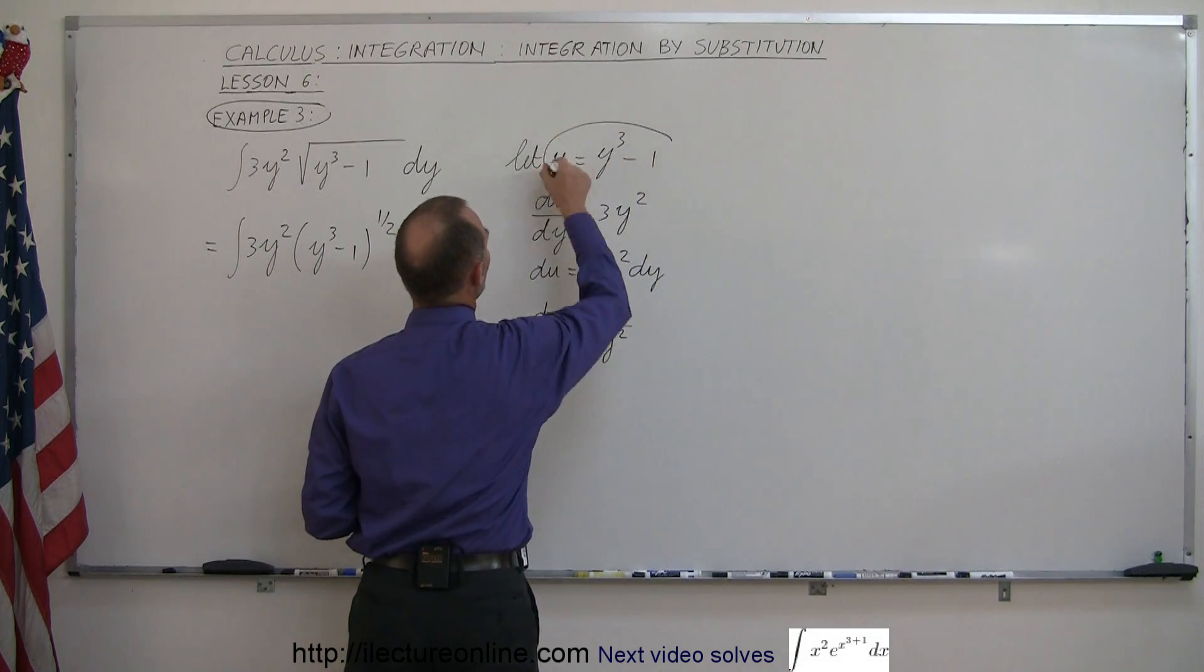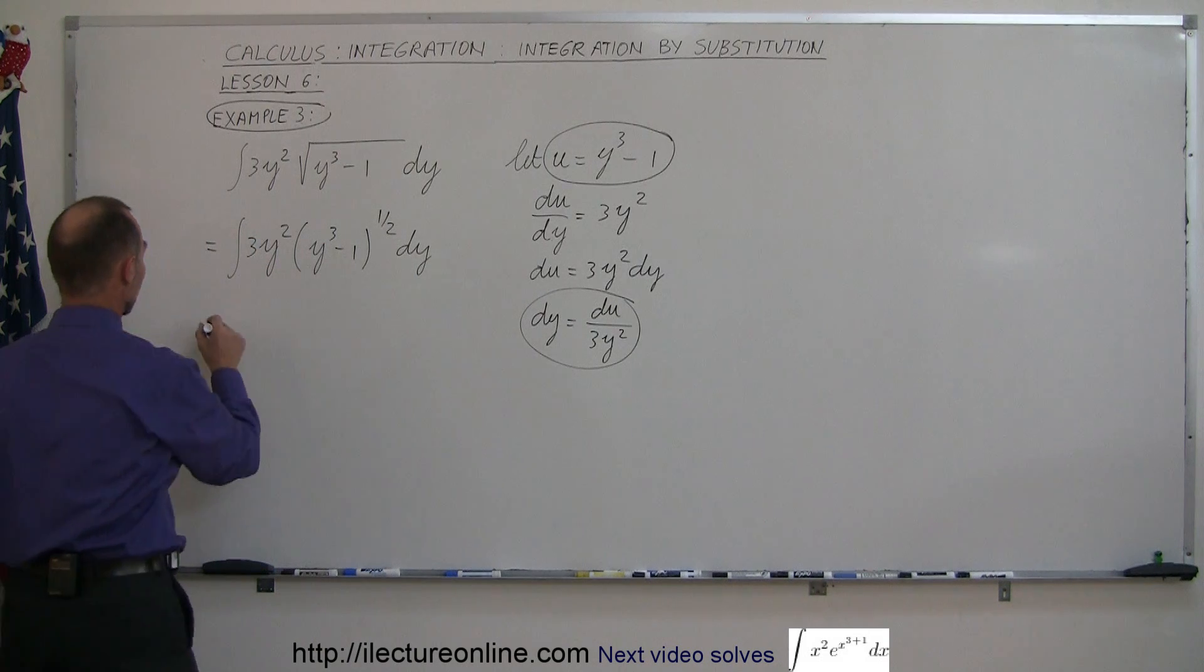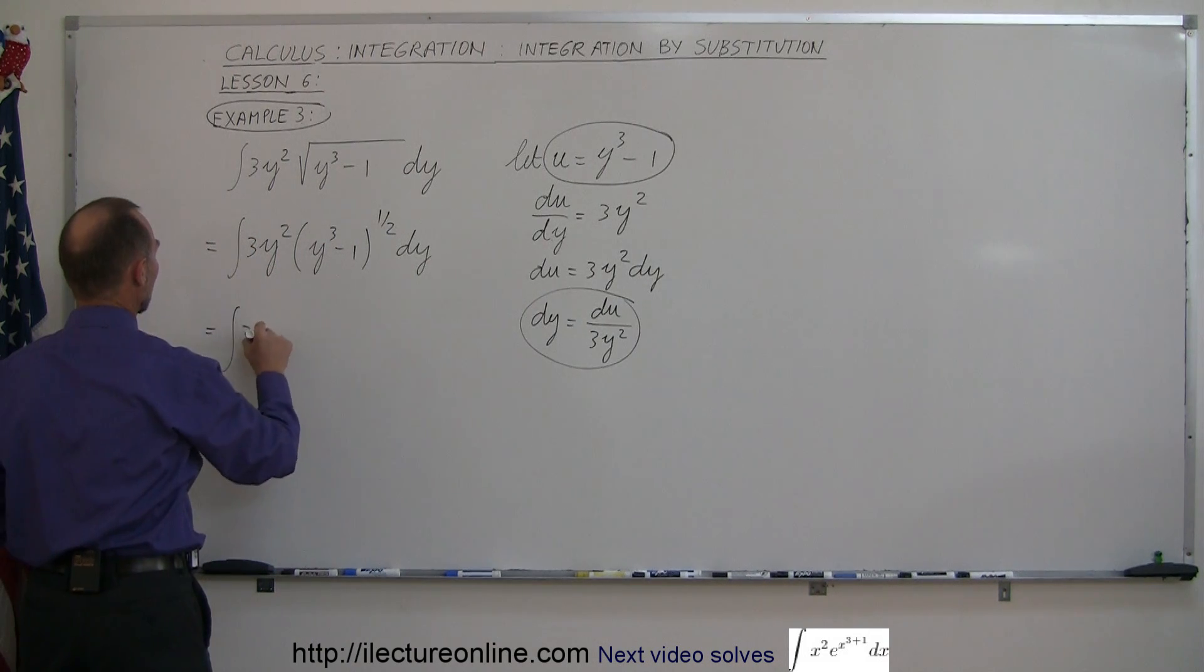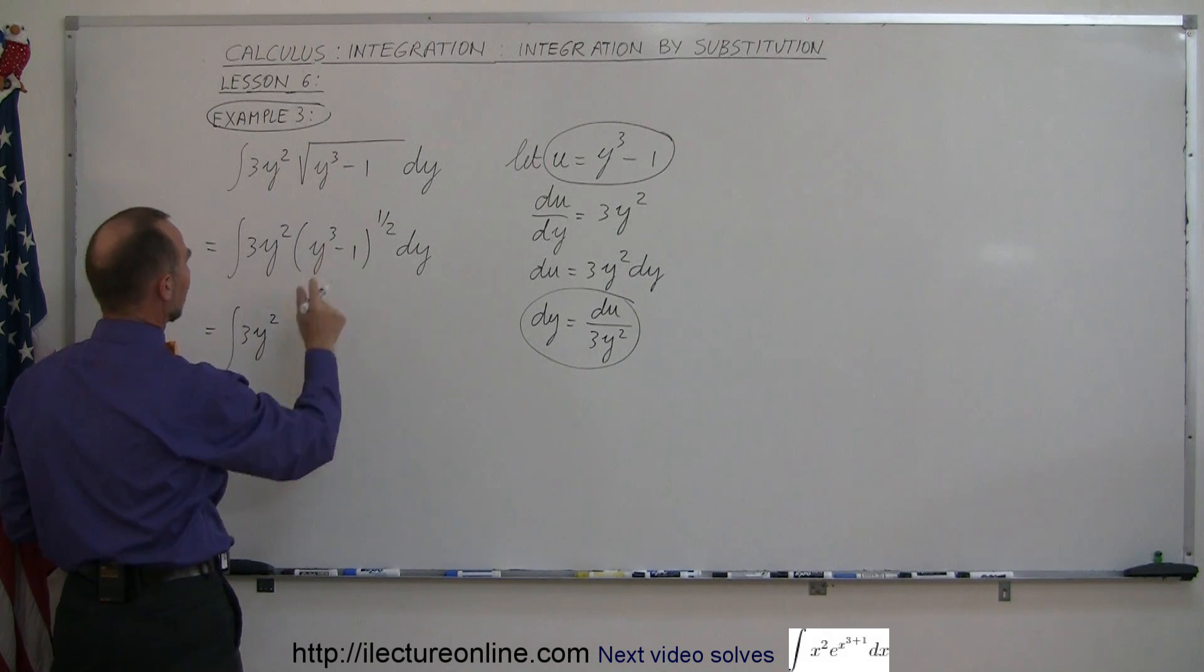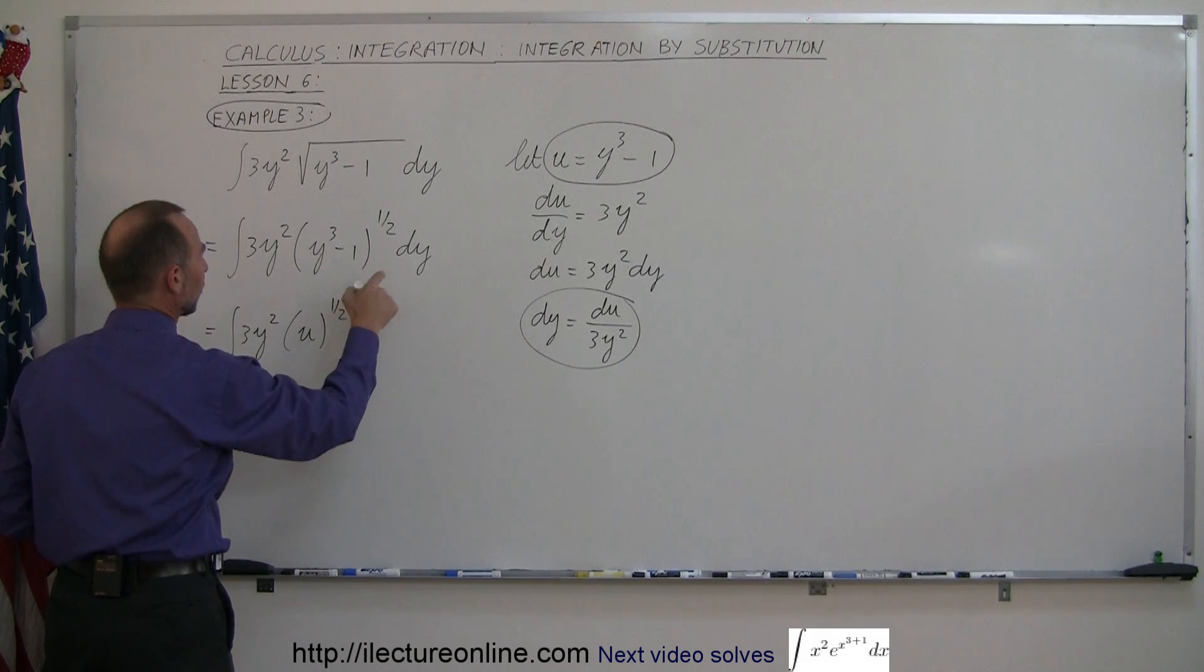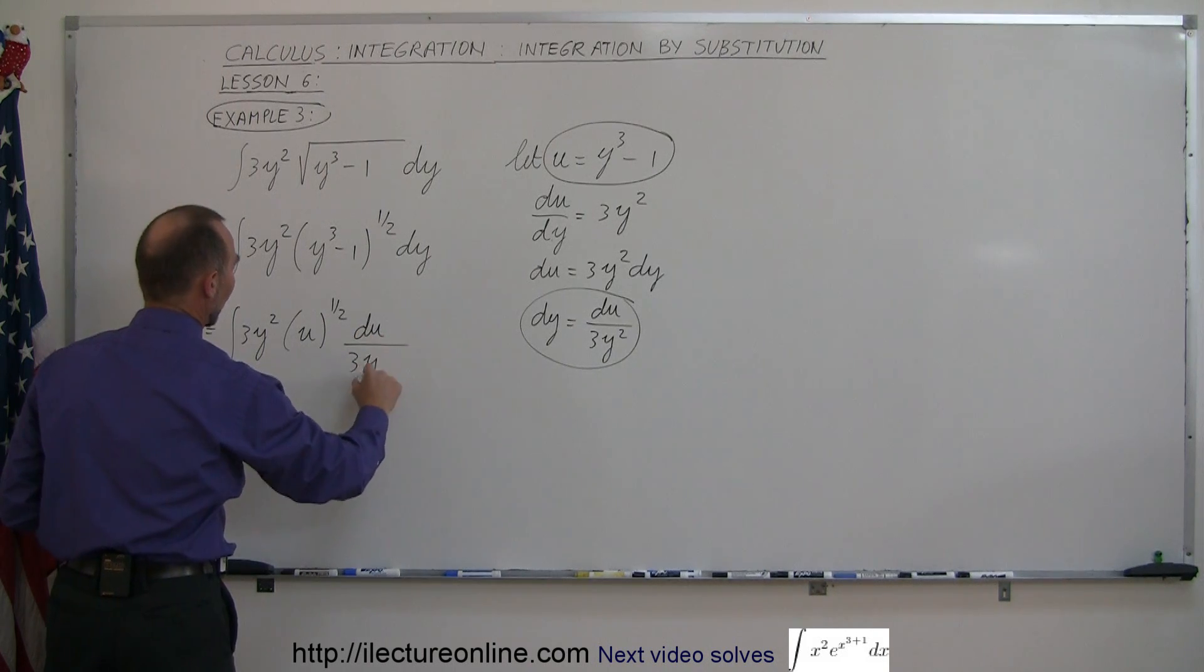And we're going to substitute this and this back in the integral and see what we get. So this is equal to the integral of 3y squared times, instead of writing y cubed minus 1, we'll write u to the 1 half power and instead of dy we'll write du divided by 3y squared.